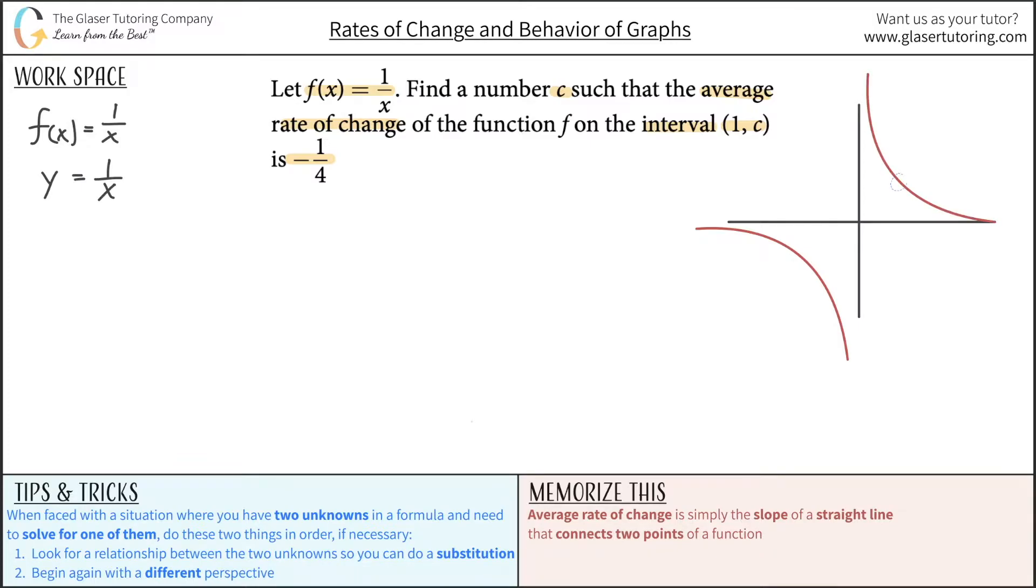Now, they want us to find the average rate of change. As soon as I hear those words, average rate of change, I think, oh, slope, slope of a line that connects two points on the graph, right? I have written that down here. You have to memorize that. But the average rate of change is the slope of basically a secant line that connects two points on the graph.